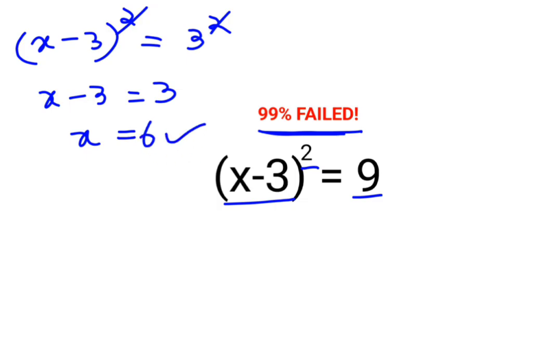But at this point, a lot of people don't realize that when you take square roots, the answer comes out to be positive and negative 3. So here you also had another option of x-3 becoming equal to -3. So when you shift the negative 3 on the other side, it becomes -3+3.